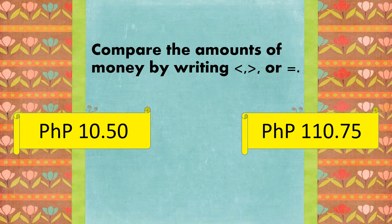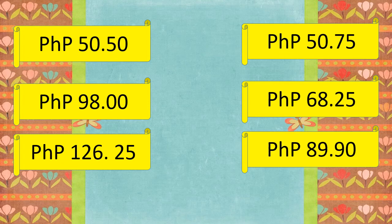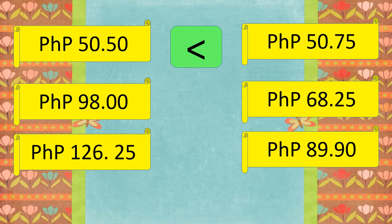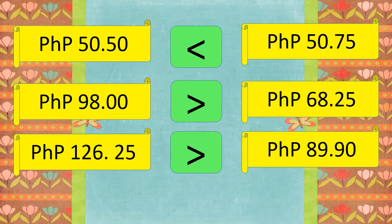This time, let us try to compare the amount of money by writing the symbol less than, greater than, or equal to. So, 10 pesos and 50 centavos compared to 110 pesos and 75 centavos — the symbol we use is less than. Let us try to compare 50 pesos and 50 centavos to 50 pesos and 75 centavos. The symbol is less than. How about if we compare 98 pesos to 68 pesos and 25 centavos? It's greater than. How about 126 pesos and 25 centavos compared to 89 pesos and 90 centavos? It's also greater than.